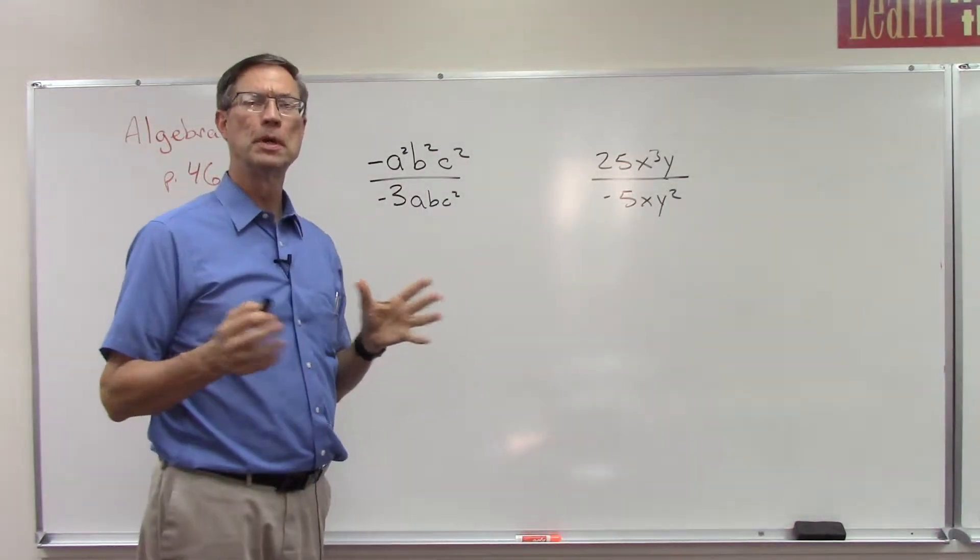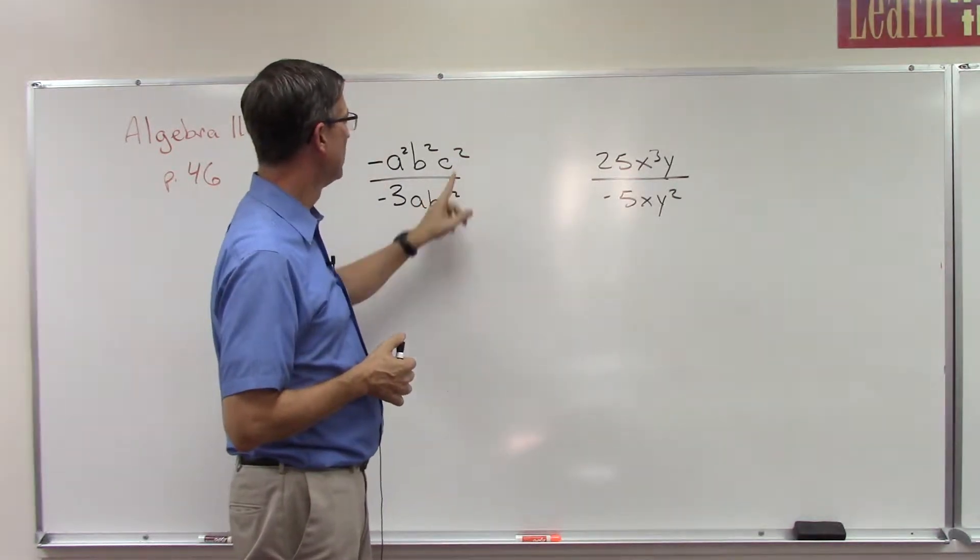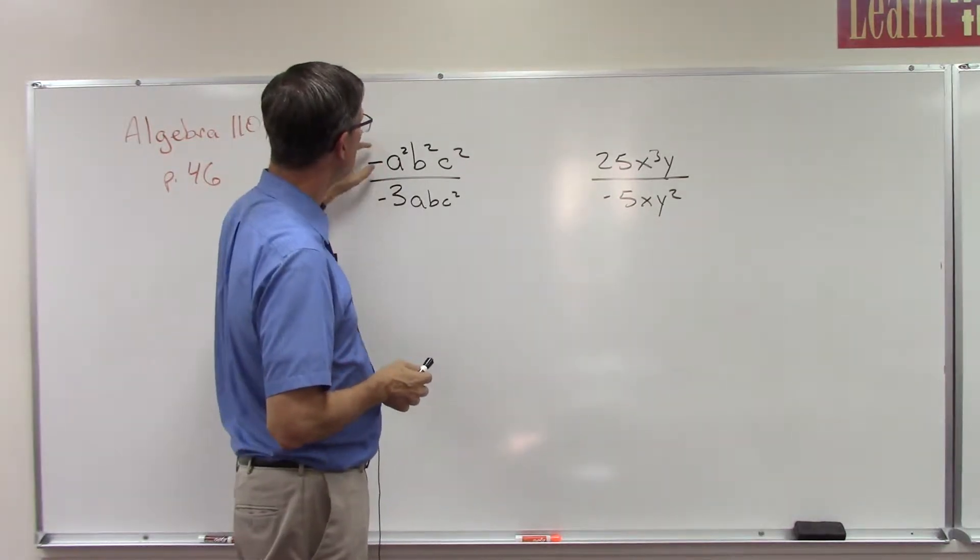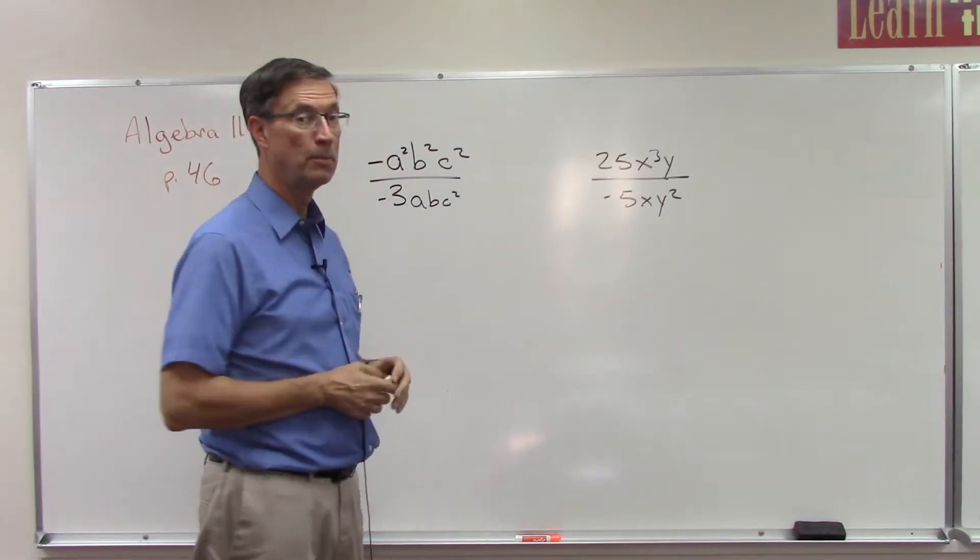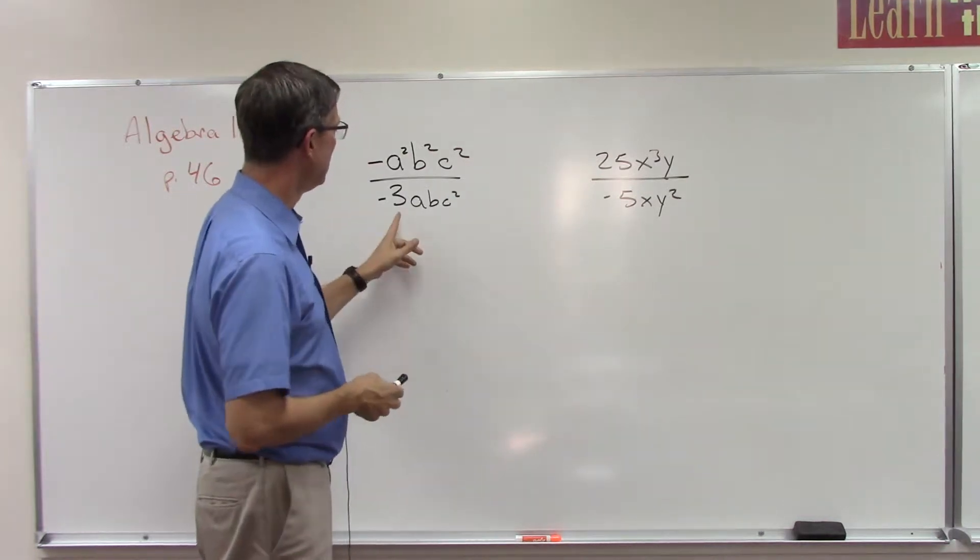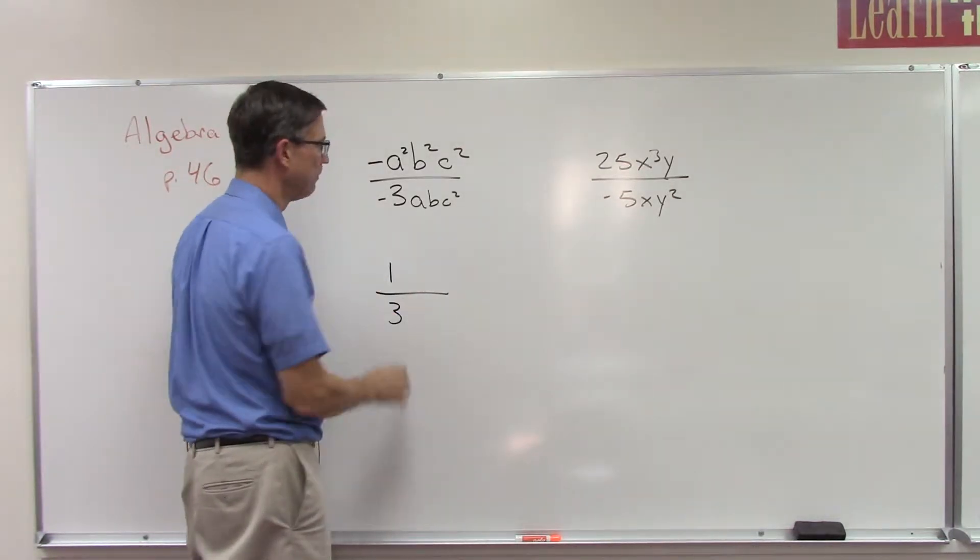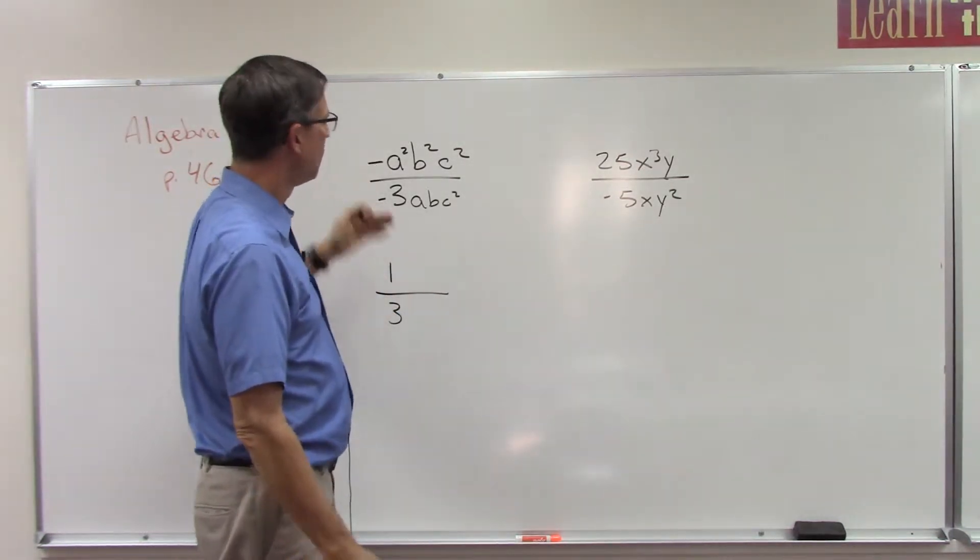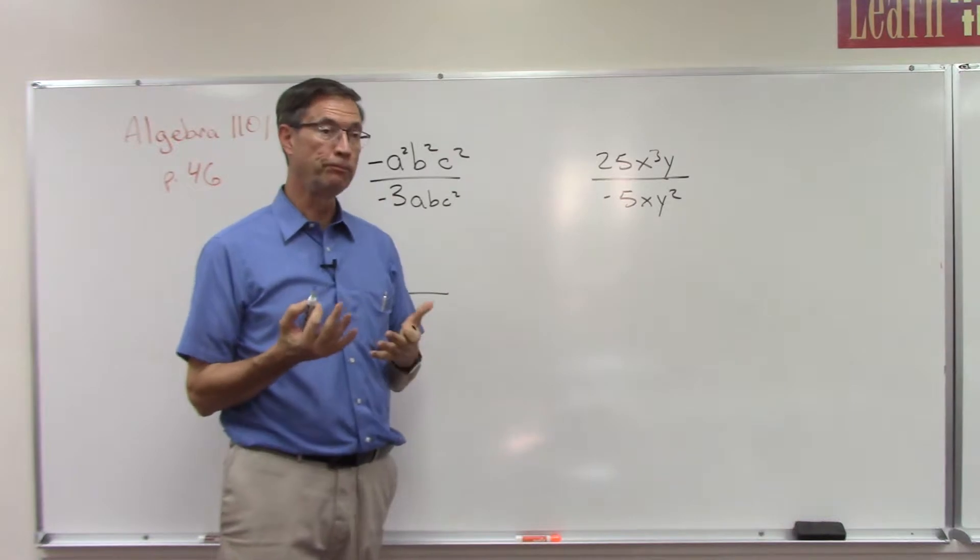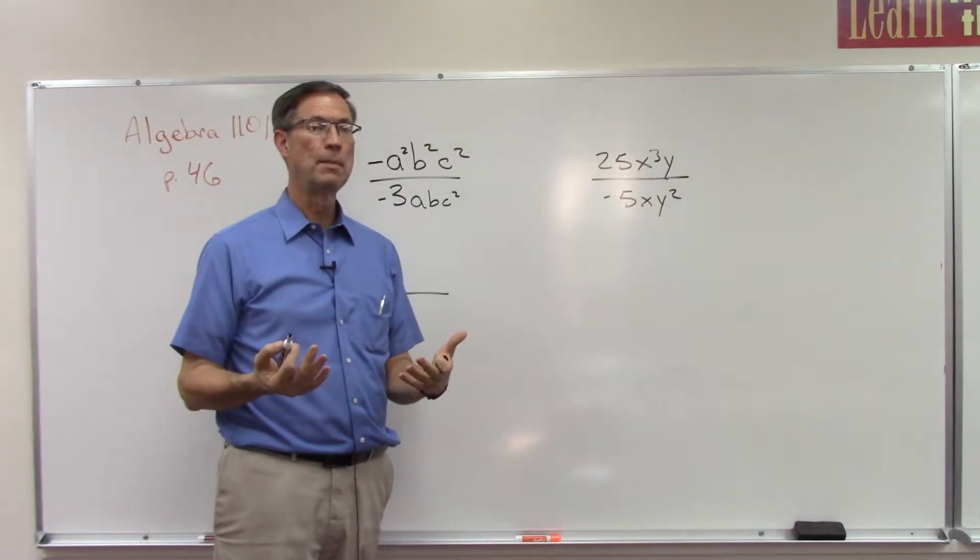We have a rule in algebra: mathematicians say you can't have the same letter on the top and on the bottom, so we have to simplify that. We don't see a number up here, so we assume the numerical coefficient is 1, and the 3 is on the bottom. We have a negative divided by a negative, so remember the negatives out front - one's the numerator, one's the denominator. We're dividing numerator divided by denominator.